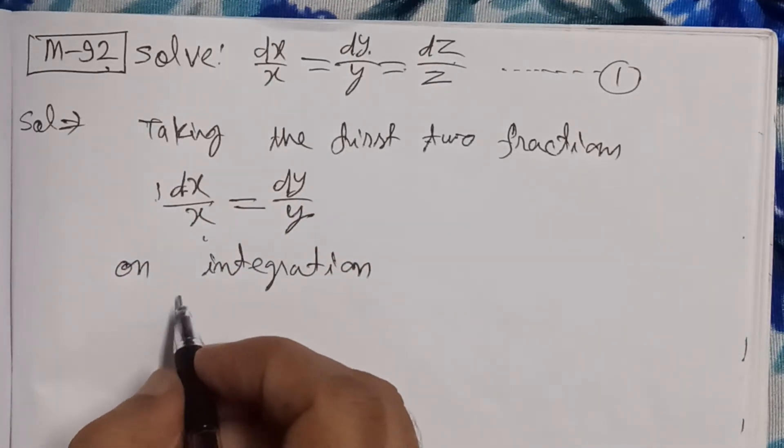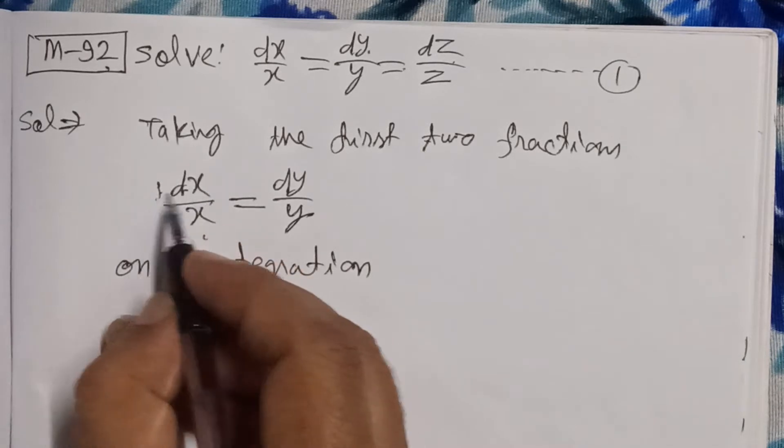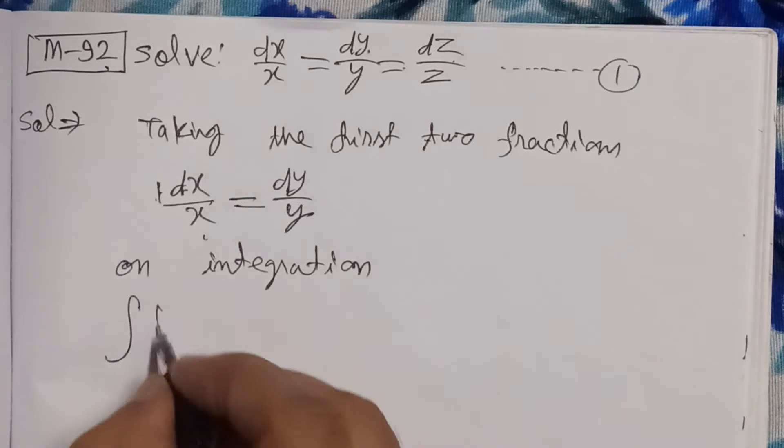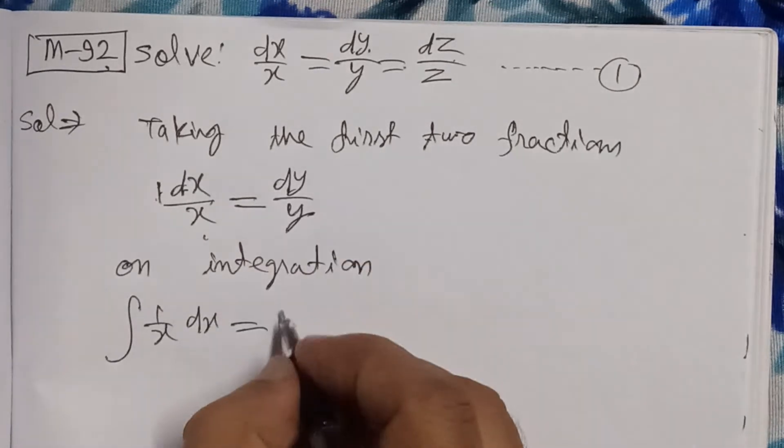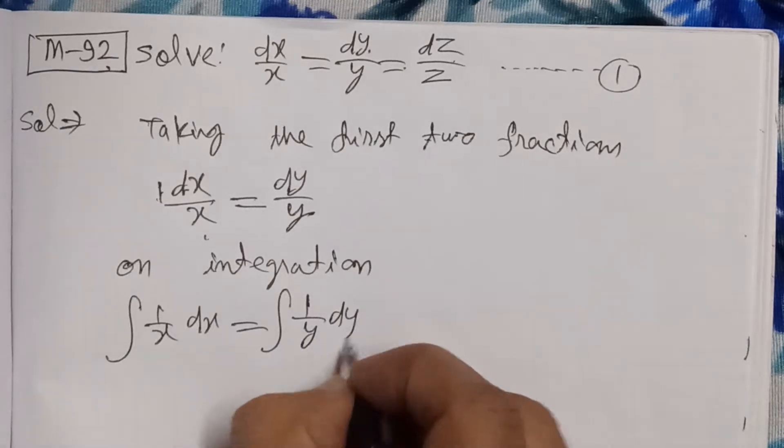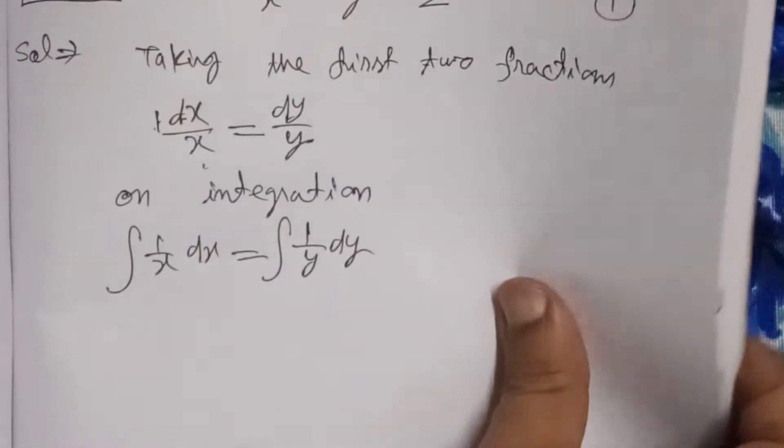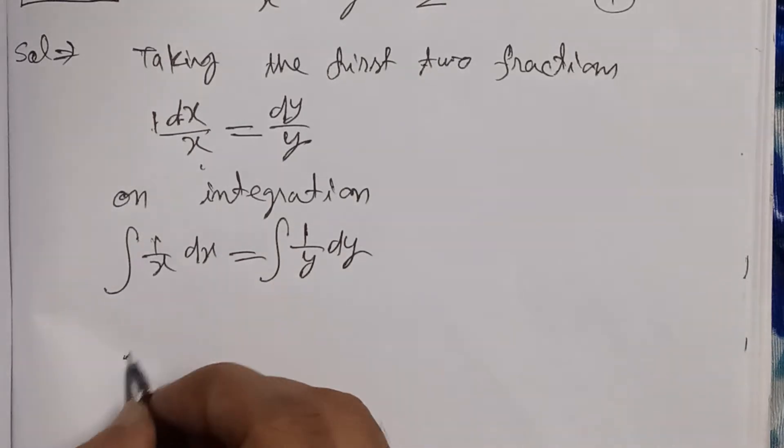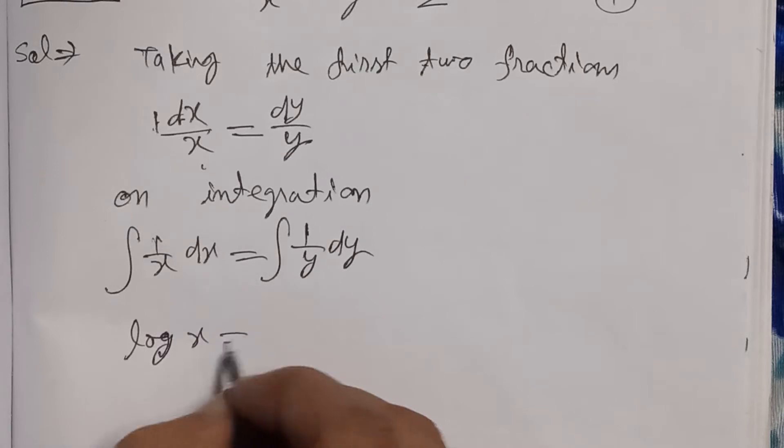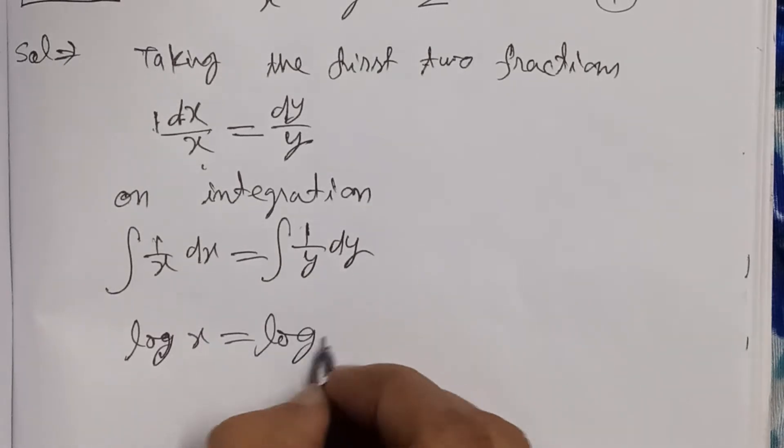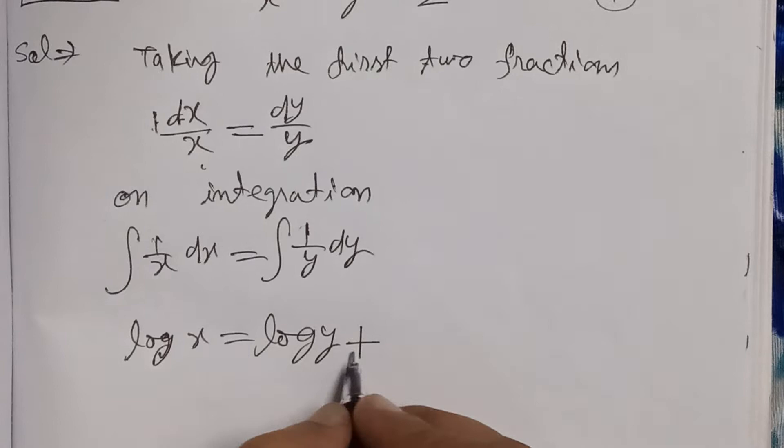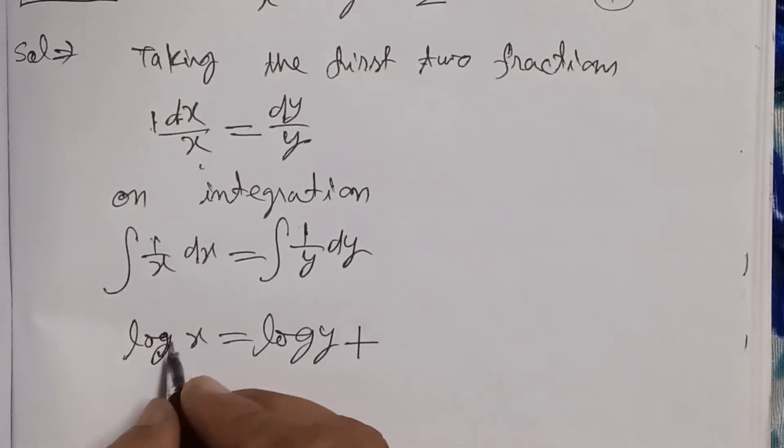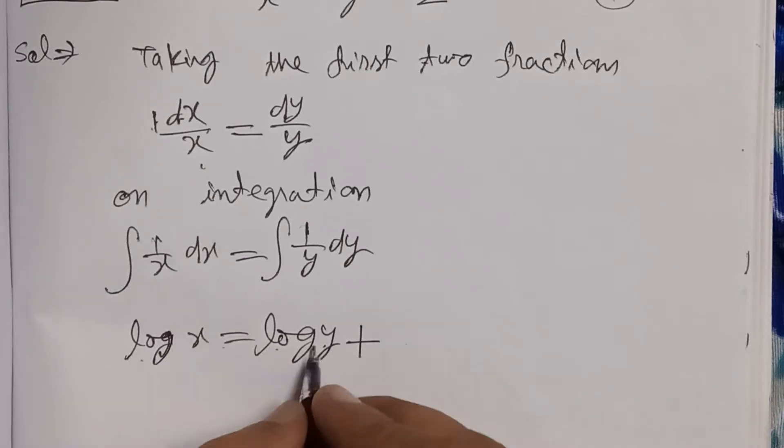Similarly, on the right-hand side, we integrate 1/y with respect to dy. We know that the integral of 1/x equals log x, and the integral of 1/y equals log y. Plus a constant—here all terms are in the form of log, so the constant should be added as log c1, because another constant c2 we will include in our solution.